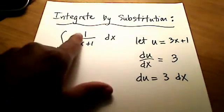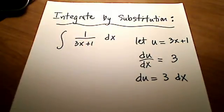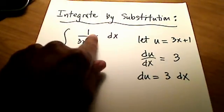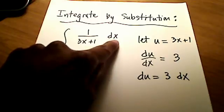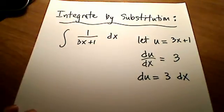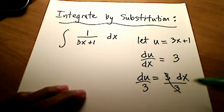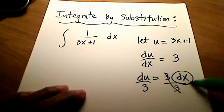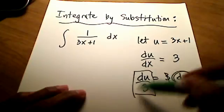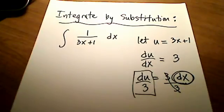But I don't see 3dx in my original problem. I see dx, not 3dx. So let's divide both sides by 3. Now, in place of dx, we substitute du/3.